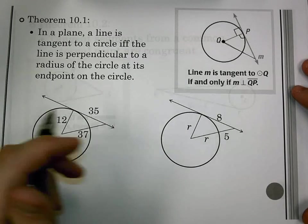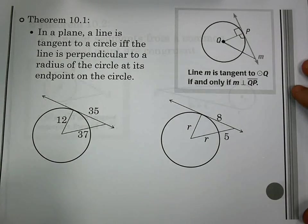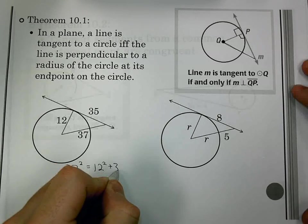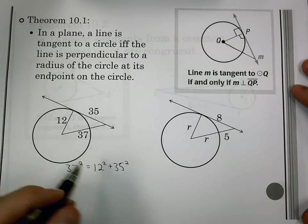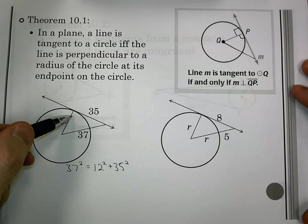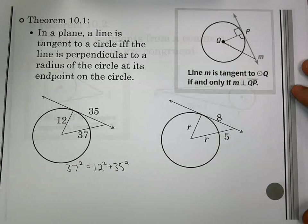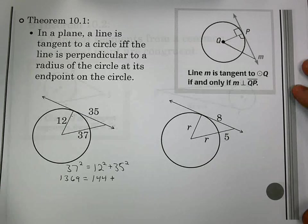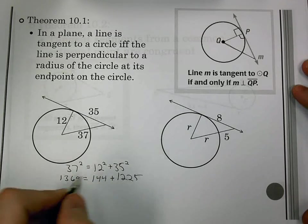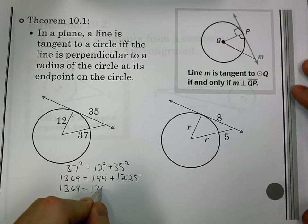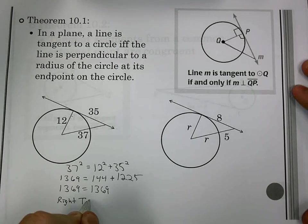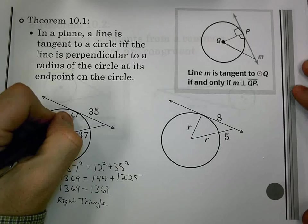So in this first one, let's say we're given these values and we have to show that it would be a tangent. So we would do 37 squared equals 12 squared plus 35 squared. Because if this turns out to be true, that would tell us this would be the hypotenuse, we'd have a right angle here, and we would have a tangent. So 37 squared is 1369, 12 squared is 144, and 35 squared is 1225. I can combine those and I get that they are equal. The fact they're equal means I have a right triangle. And this would be a tangent.